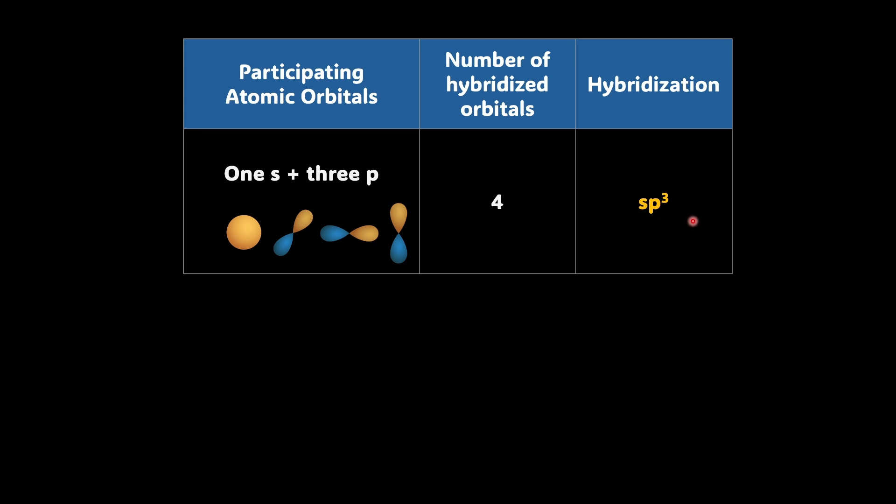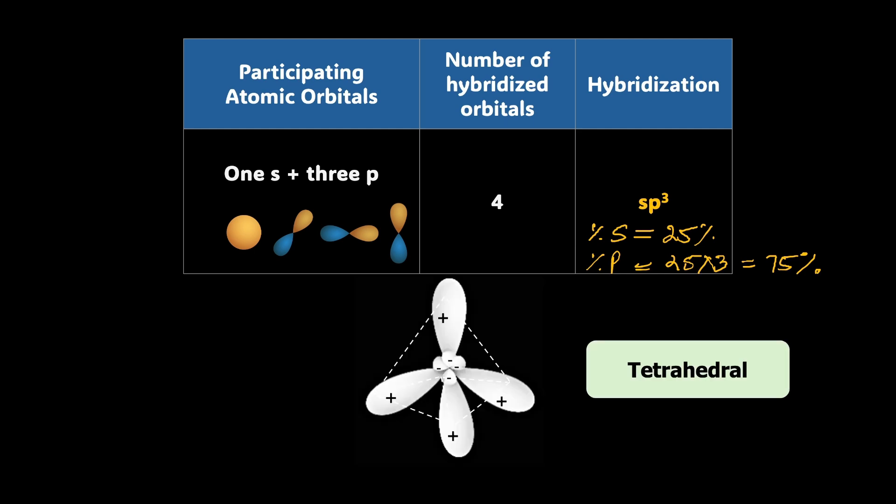Each of these now new orbitals has how much s character and p character? So can we say the percentage s character is 100 divided by 4, that means 25% and percentage p character is 100 divided by 4, but because there are three p orbitals, so 25 into 3, that means 75% p character. Now these orbitals arrange themselves in three-dimensional space so that they are as far apart from each other as possible, pointing towards the corner of a tetrahedron with the bond angle of 109.5 degree.